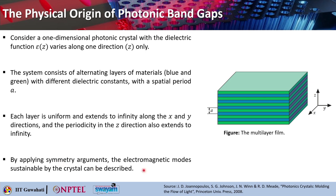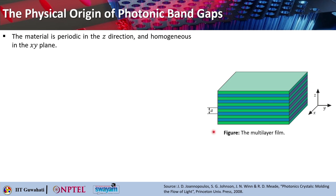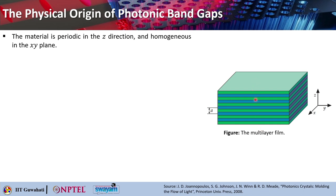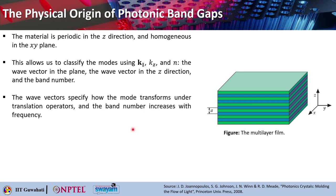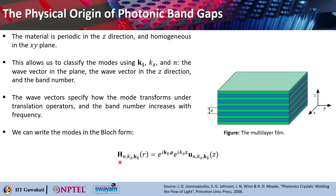By applying the symmetry arguments, the electromagnetic modes sustainable to this crystal can be described. The material is periodic along z direction and it is homogeneous in the xy plane. This allows us to classify modes using k-parallel, k-z, and n — these are the three parameters. k-parallel is basically the wave vector in the plane, k-z is the wave vector in the z direction, and n represents the band number. The wave vectors specify how the mode transforms under translation operators and the band number increases with frequency. We can write the modes in the Bloch form: h_{n,k_z,k_parallel}(r) = e^{i k_parallel · rho} · e^{i k_z} · u_{n,k_z,k_parallel}(z).